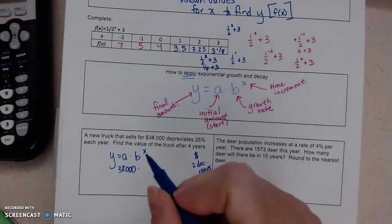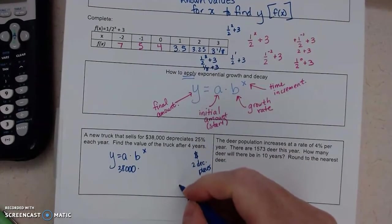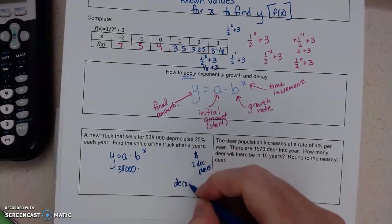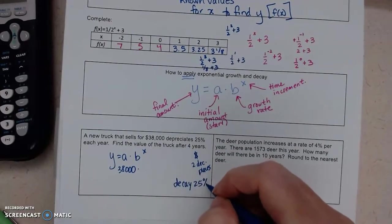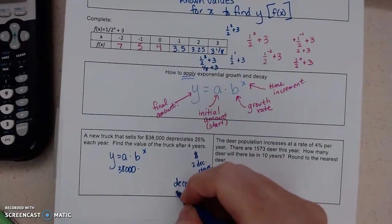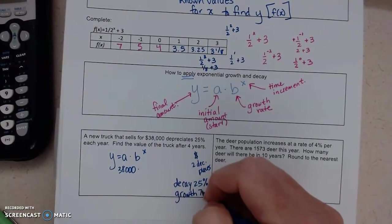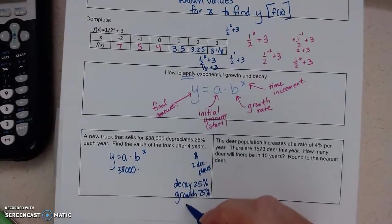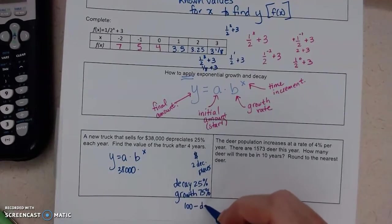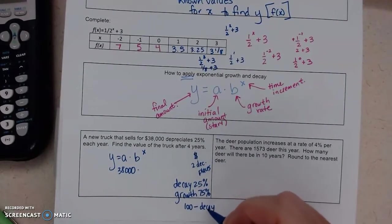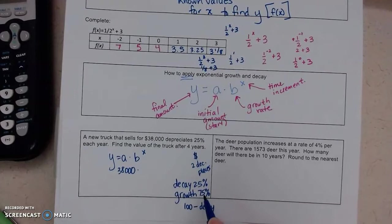Now, how much is it growing? If I depreciate 25%, so that means I'm decaying 25%, everything adds up to 100%, which means we are growing 75%. Because I'm going to take 100 minus how much I decay. So 100 minus 25 gives me 75.